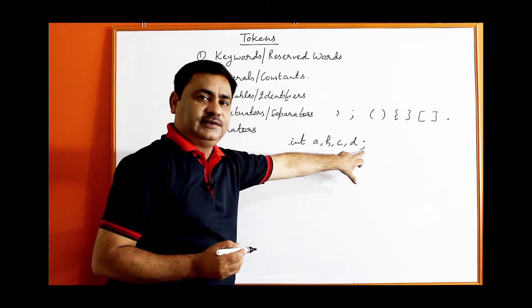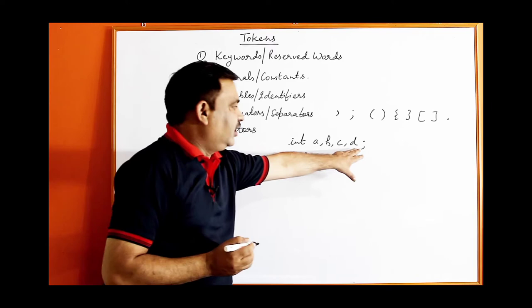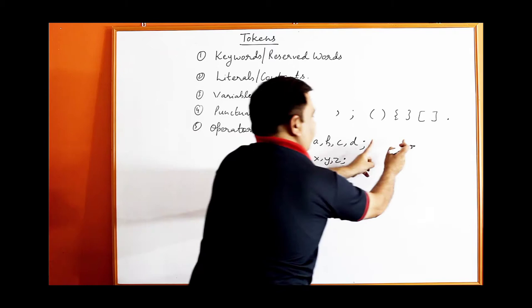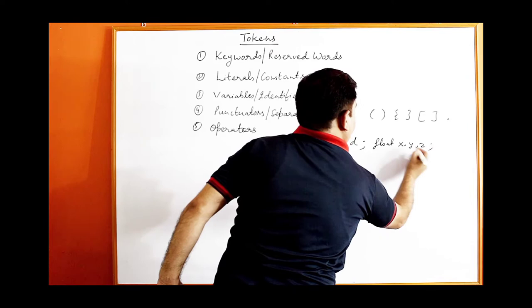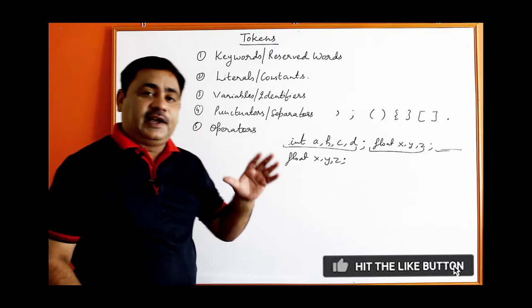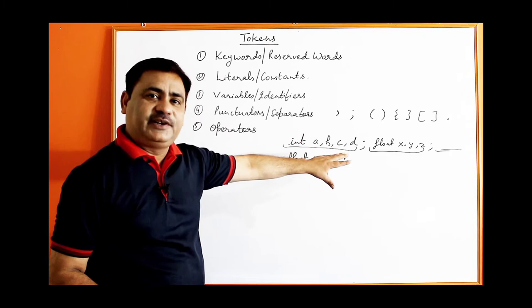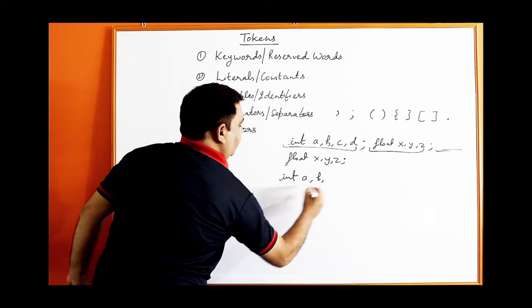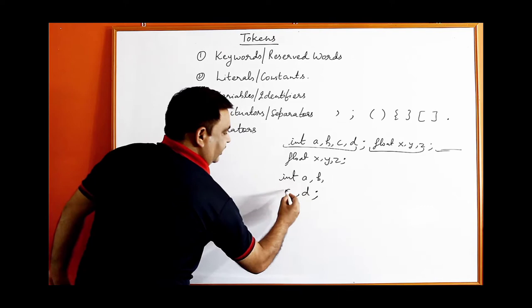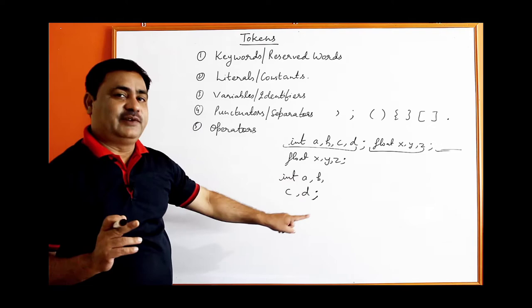Another statement example: float x, y, z — terminated by semicolon. The semicolon terminates statements. You can write any number of statements on a single line but they must be separated by semicolons. You can also split a single statement into two lines — for example, int a, b, c, d on one line with the semicolon on the next line — and it will still be considered one statement.